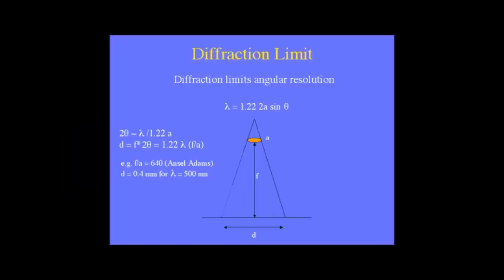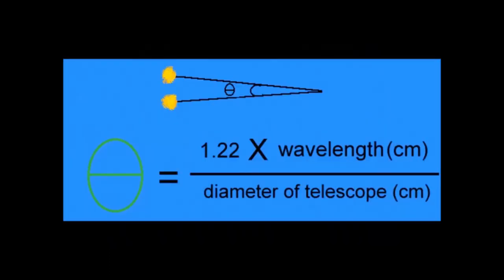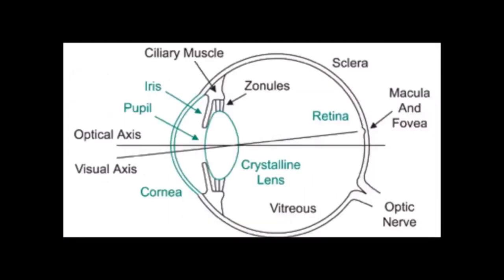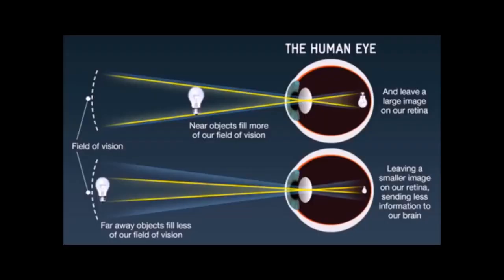The formula to find the angular resolution of the human eye or any image-forming device is the constant of 1.22 times the wavelength of light, divided by the diameter of the lens aperture or entrance pupil. Once you figure out the angular resolution of, say, the human eye, you can then determine how large or how far away an object must be for you to be able to resolve it — in other words, for you to be able to see it. This is the limit of eyesight, or the resolving power of a telescope, camera, or microscope. Anything beyond this limit cannot be seen.